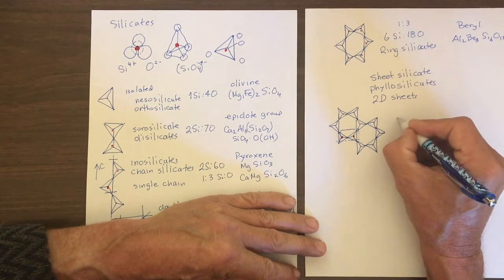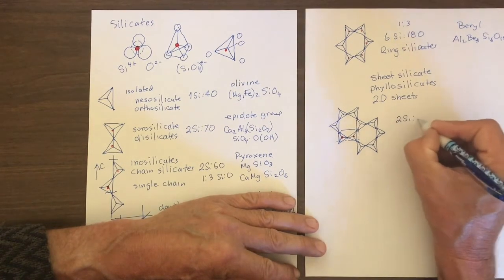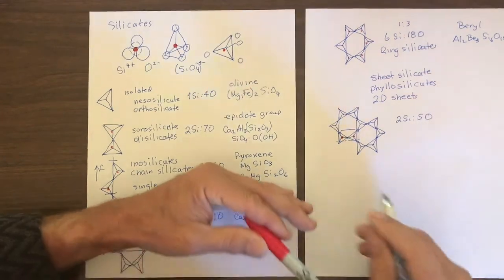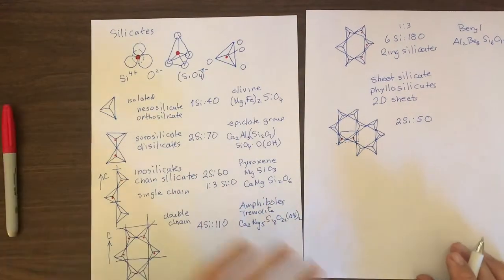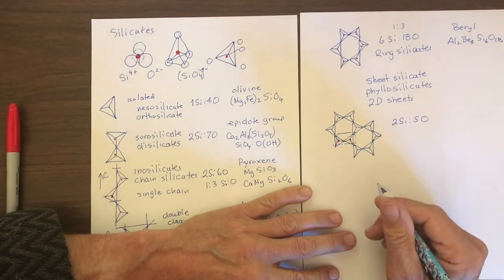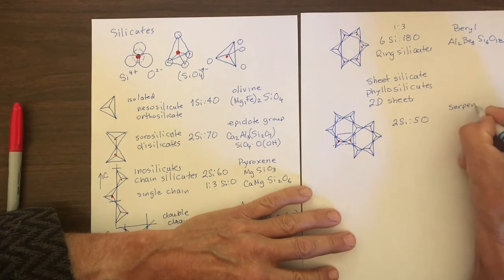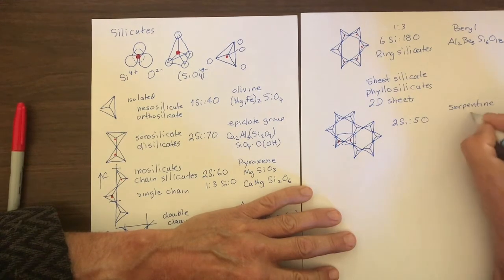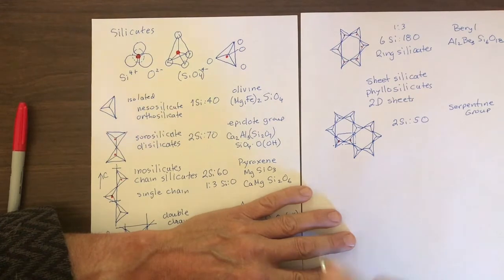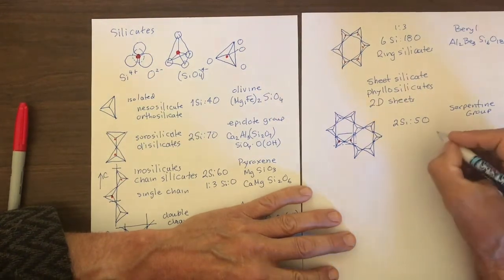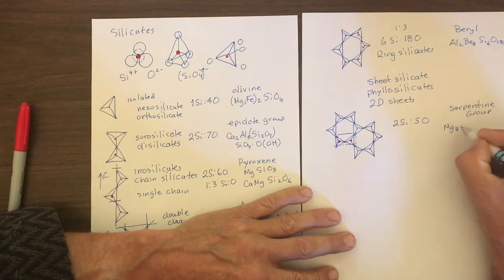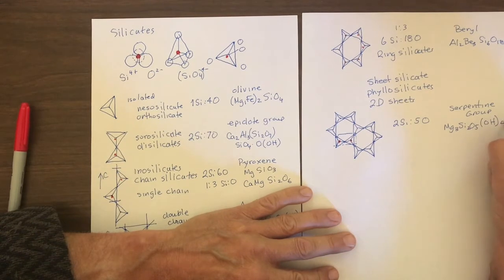So in these, the stoichiometry is two silicas to five oxygens. And a common mineral in the simple phyllosilicate would be the serpentine group, which consists of silica tetrahedral sheets. And it has a formula of Mg3, Si2, O5, OH4.